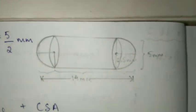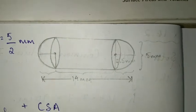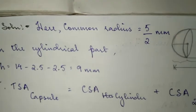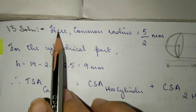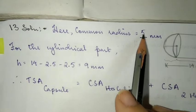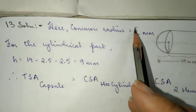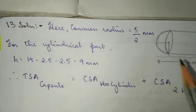Given: common radius. Common radius for the hemispherical part. Height of the cylinder, or you can say for the cylindrical part, height is equal to...